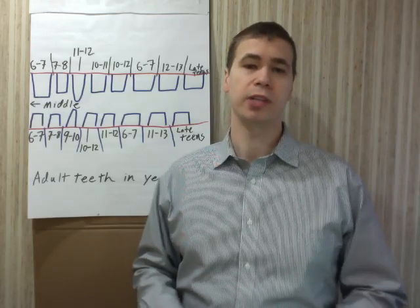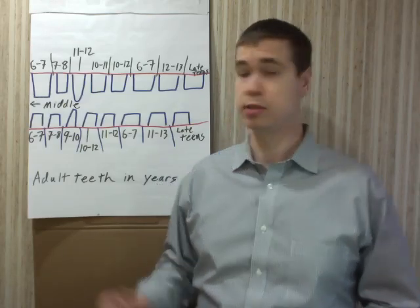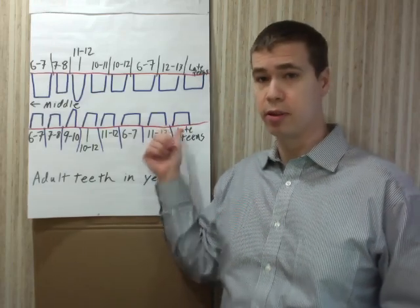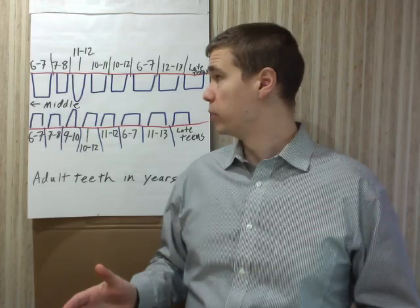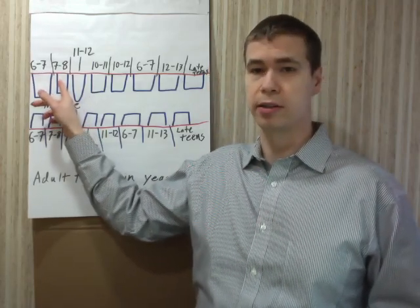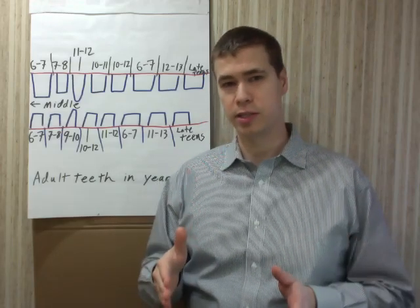It's important to remember that every child is different, and some teeth may be missing. The most commonly missing tooth is the wisdom tooth, conveniently enough, because then you don't have to pull it. The second most commonly missing tooth is the top lateral incisor, right here.